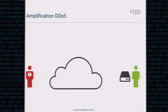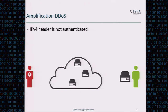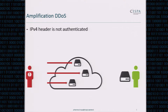Amplification DDoS attacks are a special form of reflective denial of service. The attacker will abuse some service on the internet and leverage two fundamental flaws in our current internet. The first flaw is that the header of IPv4 information is not authenticated in any way. So when I send a packet, I can write whatever I want into the header information, which means the attacker can craft packets to look as if they were coming from the victim.